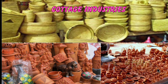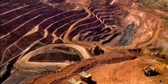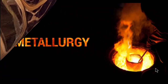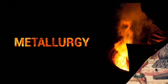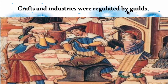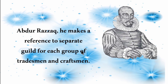Apart from agricultural production, there were numerous cottage-scale industries, including textiles, mining, and metallurgy. The crafts and industries were regulated by guilds. Abdur Razak makes reference to separate guilds for each group of tradesmen and craftsmen, with each guild performing a separate specialized craft such as pottery or decoration work.